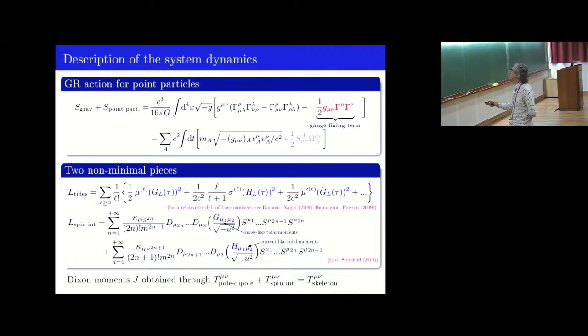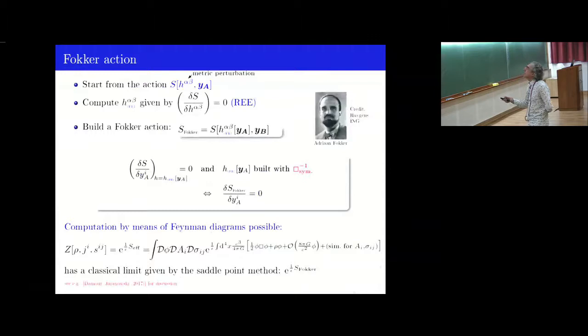And so, the Dixon moments J, introduced in the previous slide, can be obtained, of course, by differentiating this action and identifying T mu nu obtained in this way with the previous T mu nu. So, you can know what are the J quadrupole, octupole.